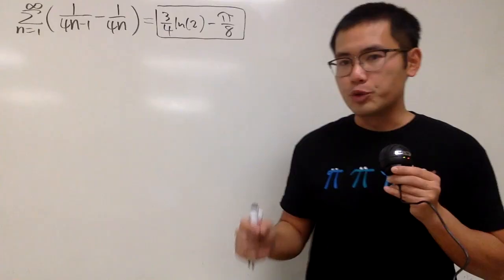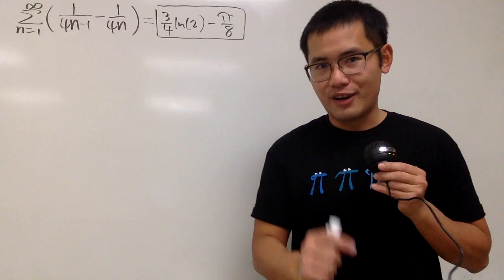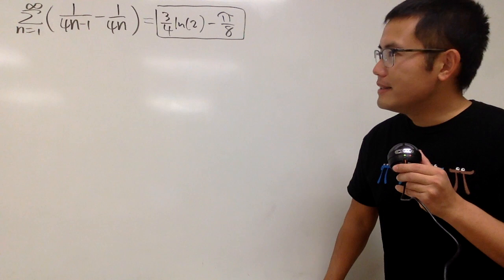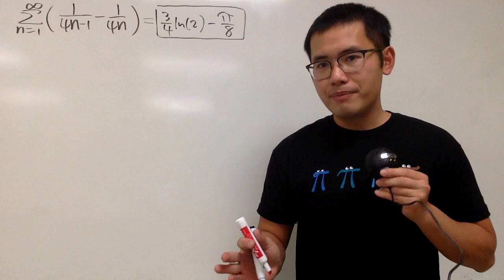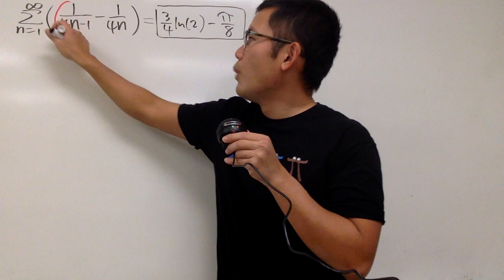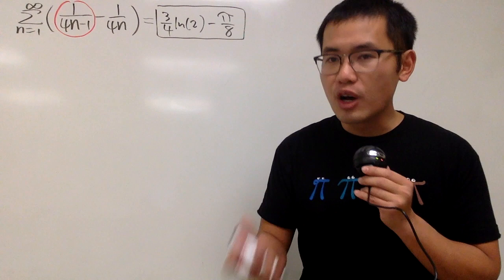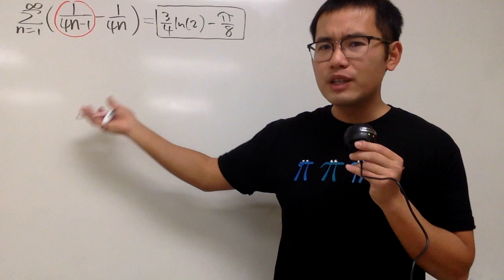Now let's talk about how we can actually approach this. This is not telescoping. Just keep this in mind: sometimes when we have summations, maybe its best friend is integration. So let's look at this right here: 1 over 4n minus 1. Can we think about an integral so that that will result as 1 over 4n minus 1? We want to have the 4n minus 1 in the denominator. And if we integrate x to some power, the power will end up in the denominator, right? So let's look at the integral.